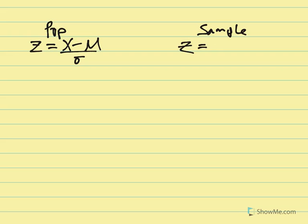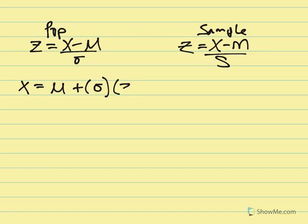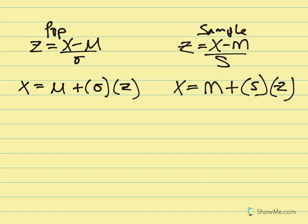For a sample, Z equals X minus m — the sample mean — divided by s, the sample standard deviation. For calculating X: X equals mu plus standard deviation multiplied by the Z-score. The mean is home base, and that product tells us how far to move from it to solve for X. For a sample, X equals m plus s multiplied by Z.